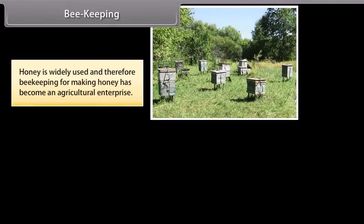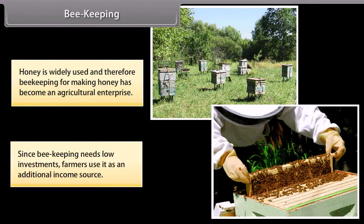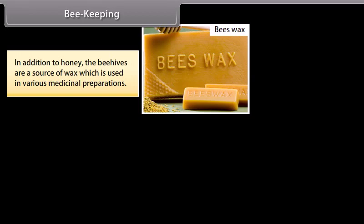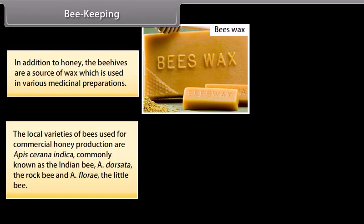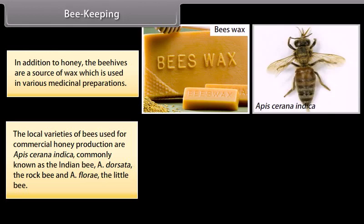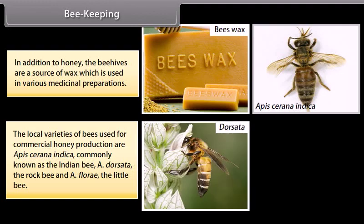Honey is widely used, and therefore beekeeping for making honey has become an agricultural enterprise. Since beekeeping needs low investment, farmers use it as an additional income source. In addition to honey, the beehives are a source of wax which is used in various medicinal preparations. The local varieties of bees used for commercial honey production are Apis cerana indica, commonly known as the Indian bee, A. dorsata.